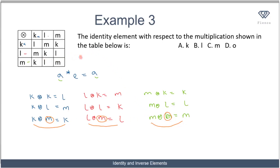So the identity element is m, and the correct answer is option C.